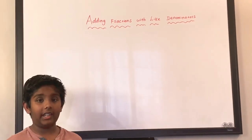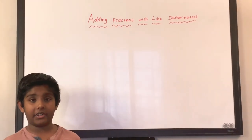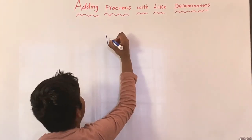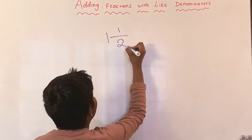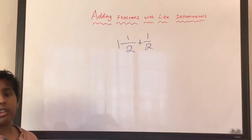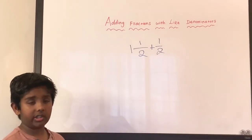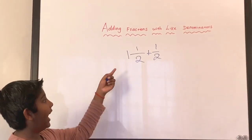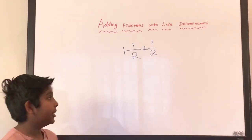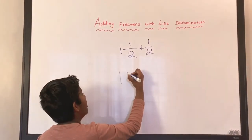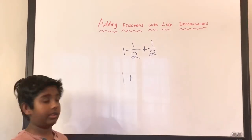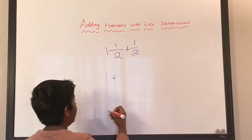Now let's see a mixed fraction example. Let's do one and one-half plus one-half. The trick for these types of questions is we can add up the wholes first. There's only one whole in this one, so that's one, plus whatever we get by adding the two fractions.